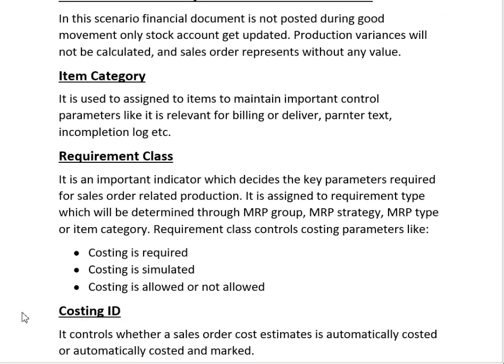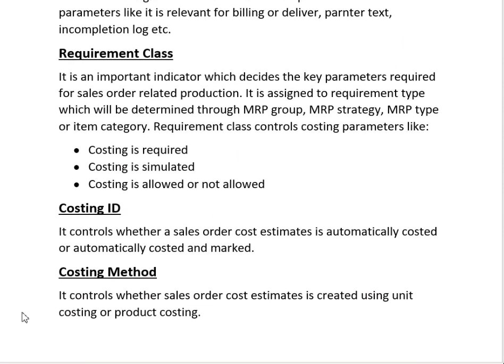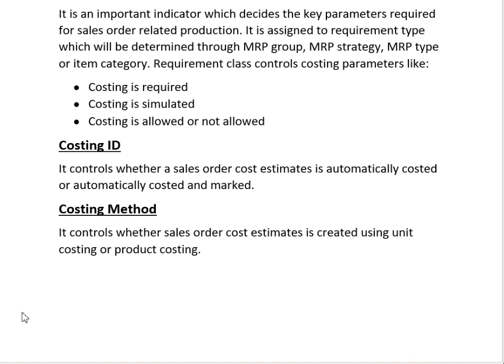Next is the Requirement Class. The requirement class controls the costing parameters — for example, whether costing is required, whether costing is simulated, and whether costing is allowed. We will further discuss and create requirement classes and item categories during configuration. Next is the Costing ID. The costing ID controls whether a sales order cost estimate is automatically costed, or automatically costed and marked. We will create the costing IDs during the configuration process.